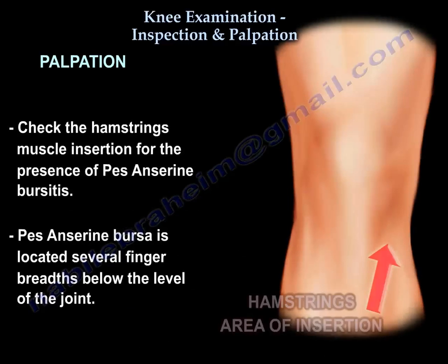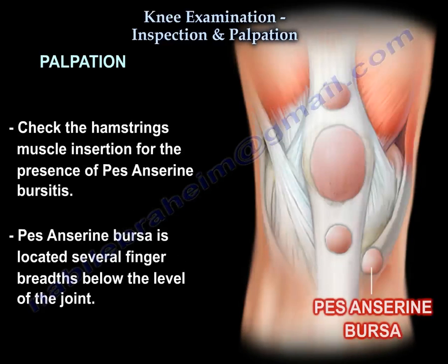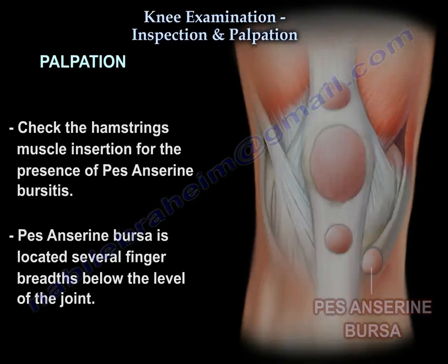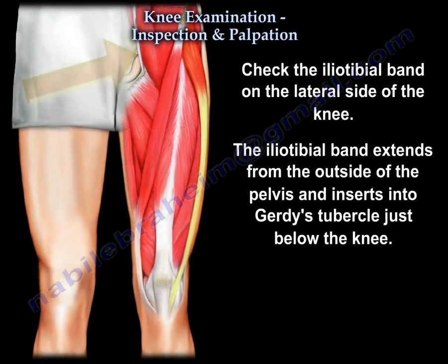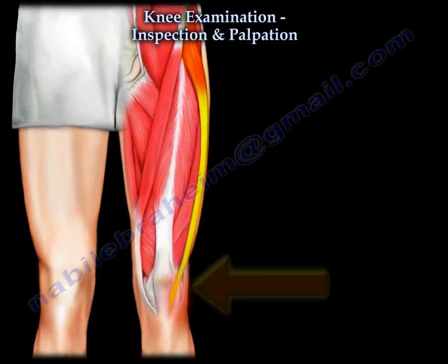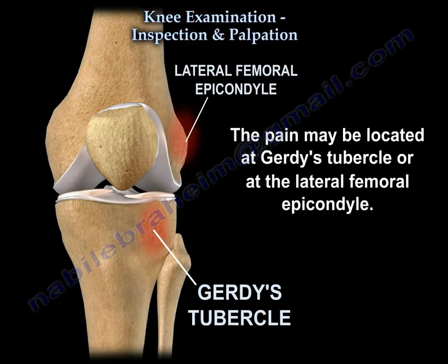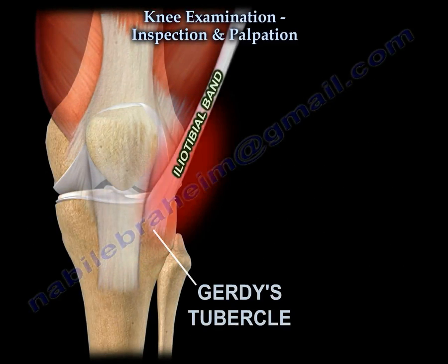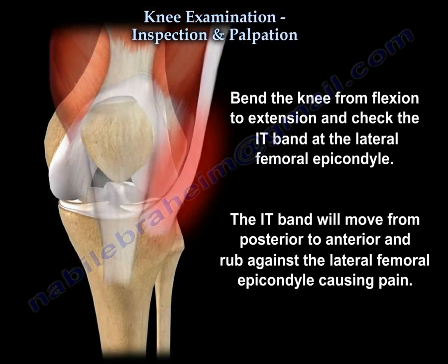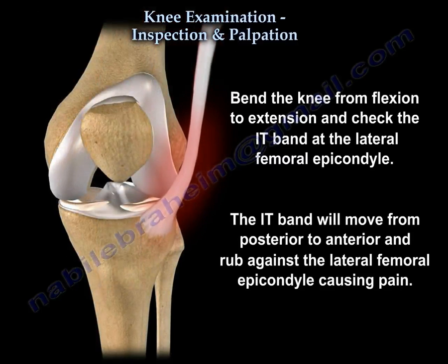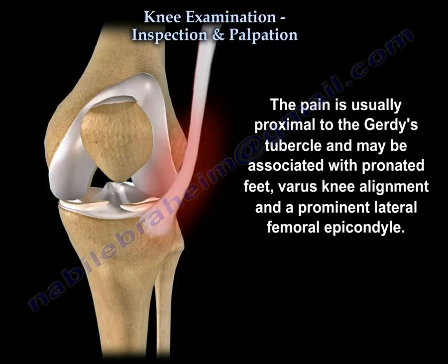Check the hamstring insertion — the pes anserine — which is several finger-breadths below the joint line medially, to assess for pes anserine bursitis. On the lateral side, check the iliotibial band, which inserts at Gerdy's tubercle. Pain can be at Gerdy's tubercle or at the lateral epicondyle of the femur. Bend the knee and check the IT band at the lateral epicondyle — as the knee goes from flexion to extension, the IT band moves from posterior to anterior and snaps against the epicondyle, causing pain.